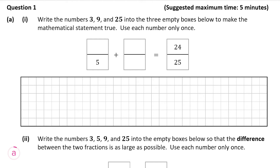The first number we can place is 25 as the denominator of the second fraction. We know the target fraction has a denominator of 25, and since 3 and 9 don't go into 25, the only way to get a denominator of 25 is to have 25 as the denominator of the second fraction. So let's write that in.